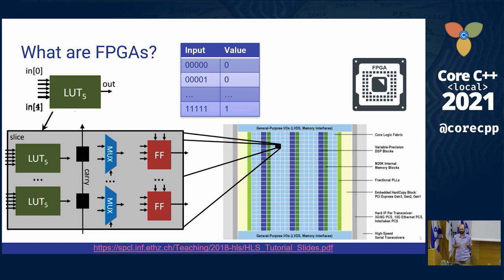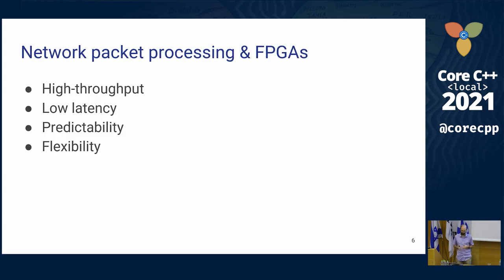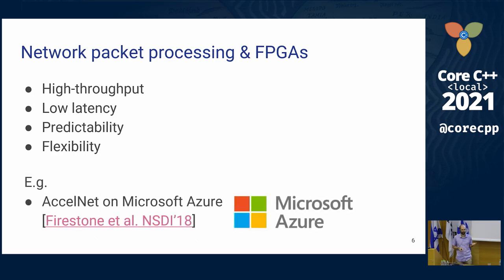You could do almost anything with an FPGA — program it to do any circuit you can think of. You could even program it to become a CPU, but that wouldn't be efficient. The main use is to customize the circuit to a specific application. This works very well with packet processing applications, which require high throughput and low latency. FPGAs provide flexibility as we can reprogram them when requirements change. As an example, Microsoft has chosen to use FPGAs in their cloud infrastructure, implementing software-defined networking tasks on FPGAs instead of CPUs.